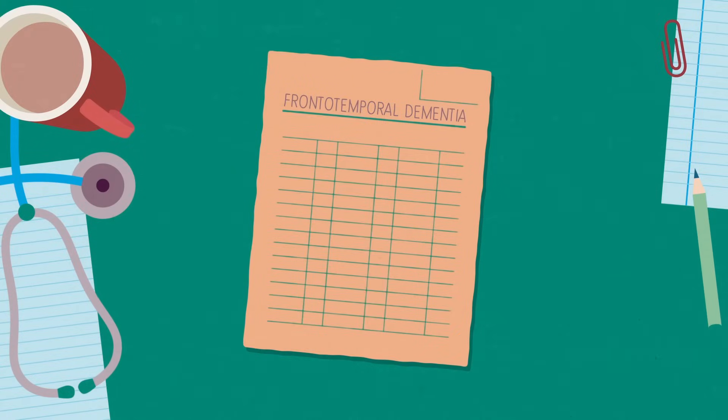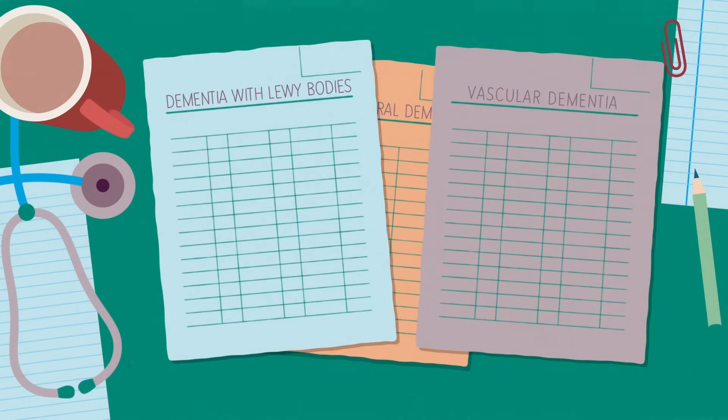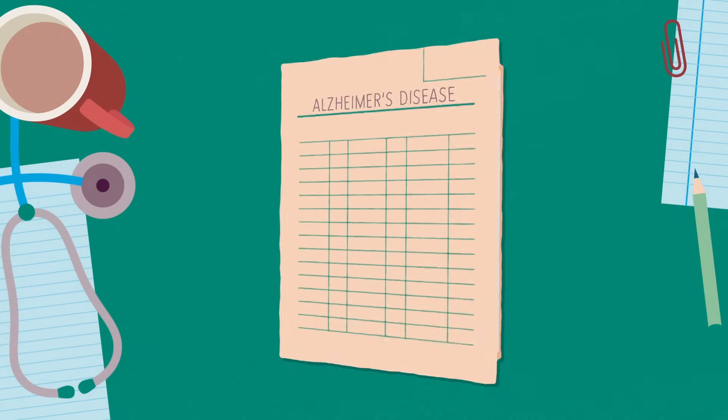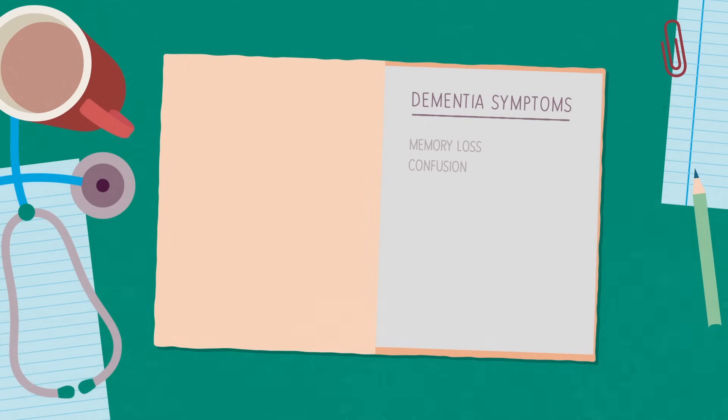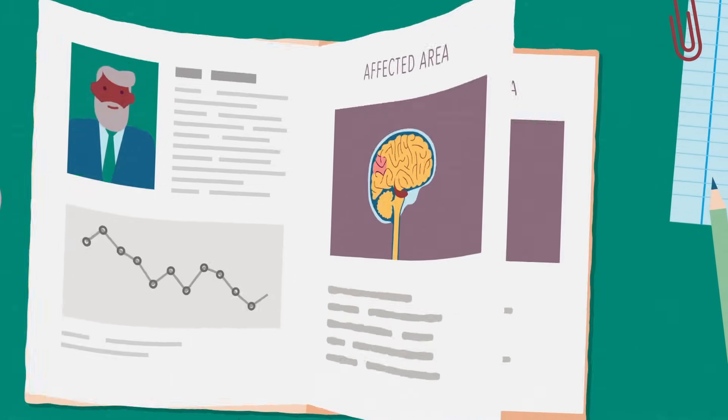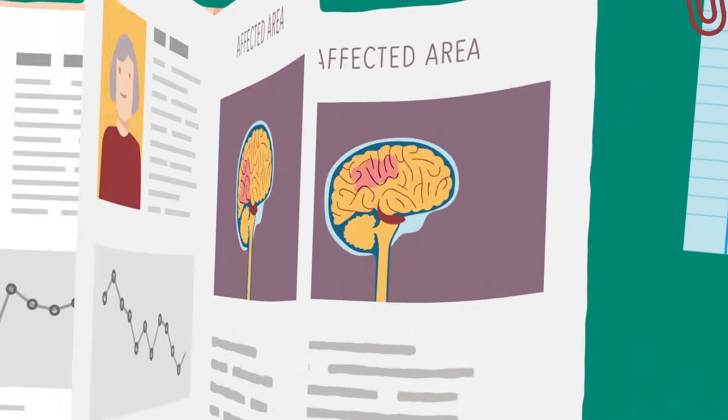There are four main diseases that cause dementia. The symptoms of these can overlap, sometimes making them difficult to tell apart, while each disease has characteristic symptoms. These can change from person to person depending on which areas of the brain the disease is affecting.